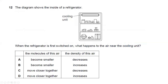Question twelve: what happens to the air near the cooling unit when a refrigerator is switched on? The air near the cooling unit is cooled. When air is cooled, molecules come closer together, so the density of the air increases. Answer D is the right answer.